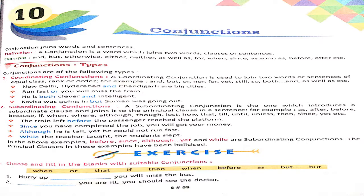Now, you have the two types of conjunctions you can see on your screen also. Coordinating conjunctions which are used to join the two words or sentences of equal rank. For example: and, but, or.